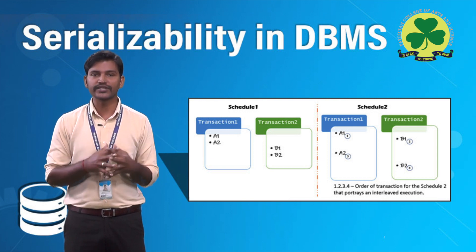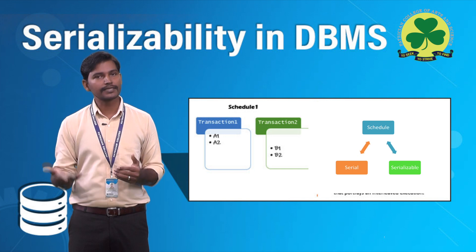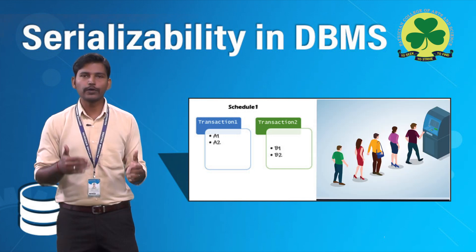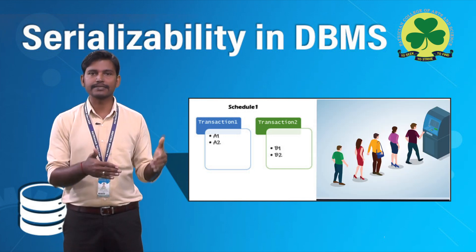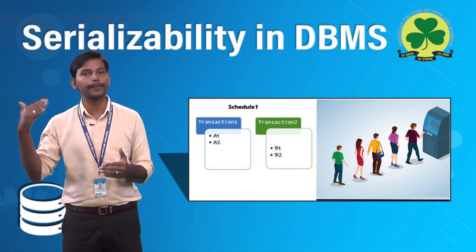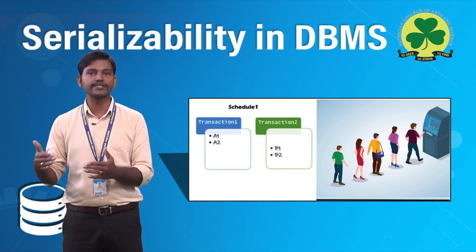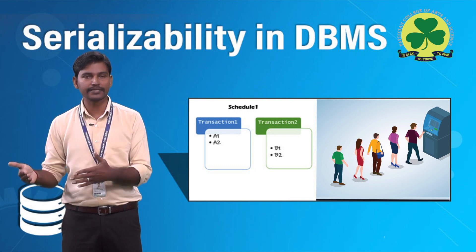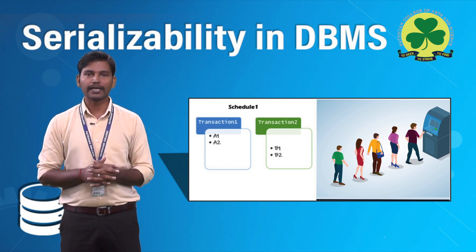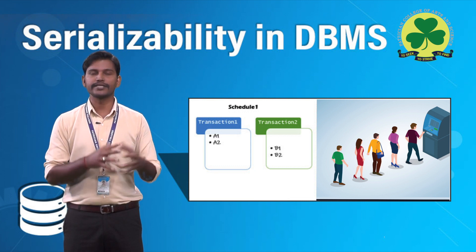There are two types of schedules: one is a serial schedule, and another is a serializable schedule. If a schedule S is considered a serial schedule, for every transaction T participating in the schedule, all the operations of that transaction are supposed to be executed consecutively. Otherwise, that schedule is considered a non-serial schedule.